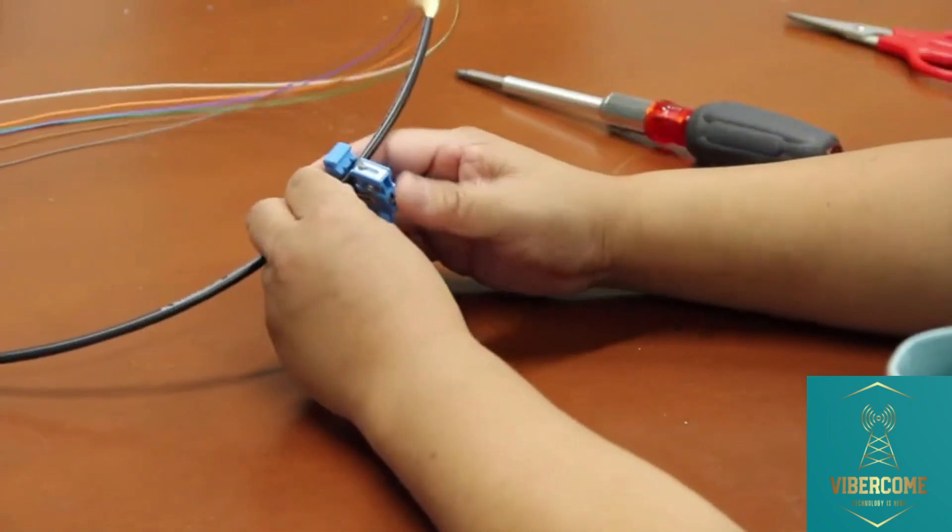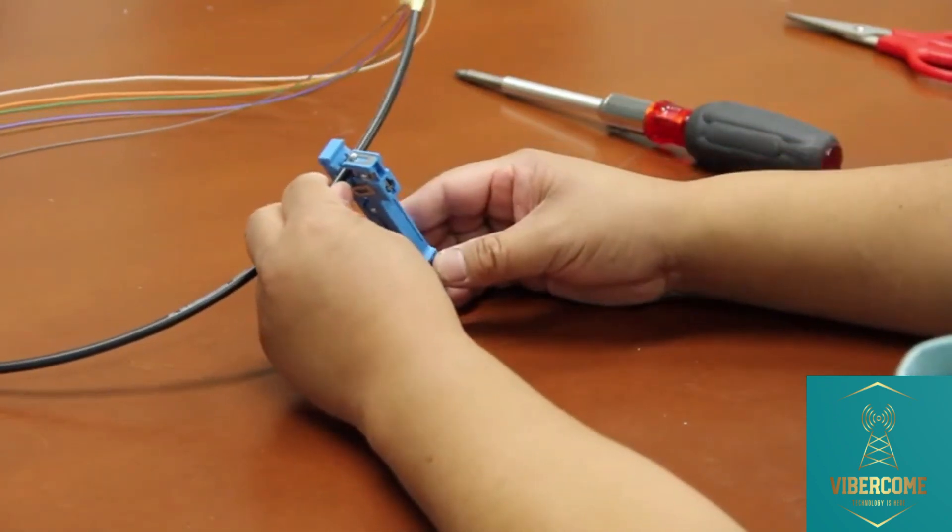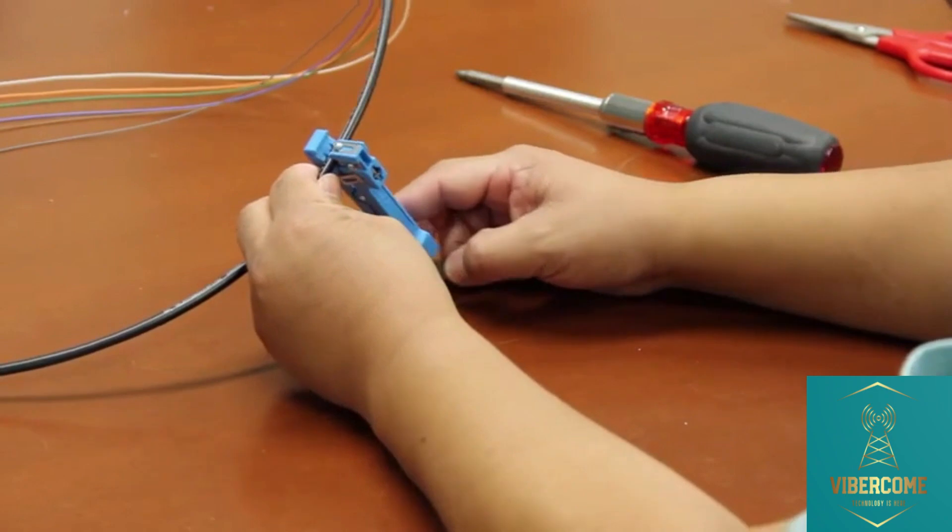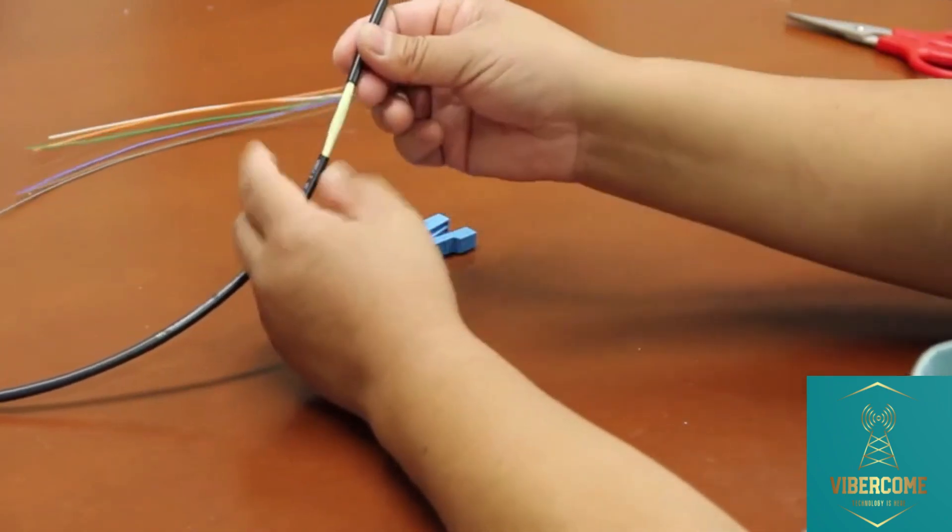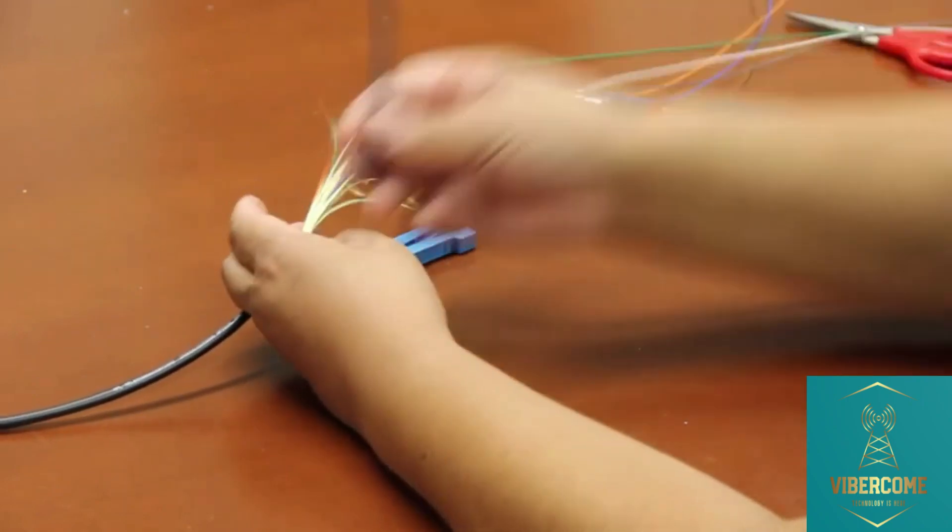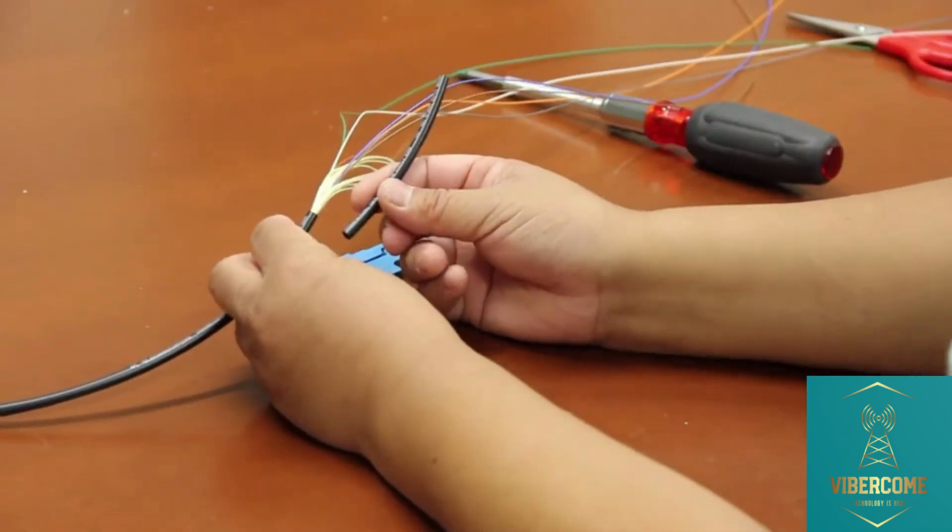Then we can put the stripper where we need to cut the buffer tube. Press the blade so it cuts into the material. Then do the ring cut once. Now the buffer tube is successfully removed and all fibers inside are intact.